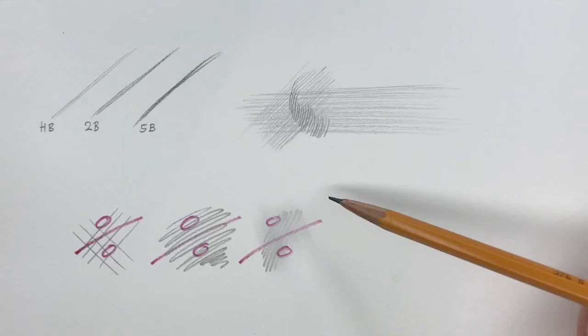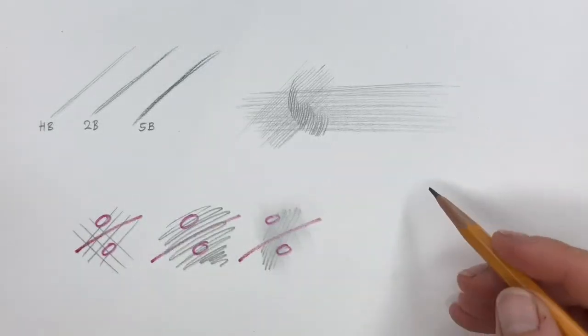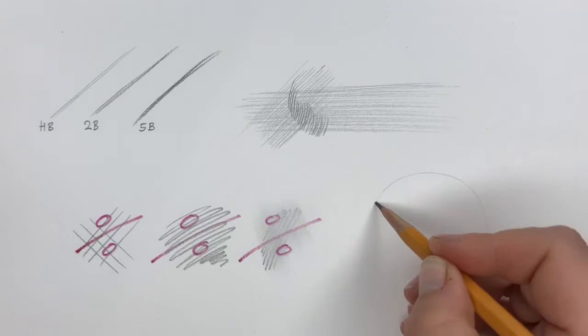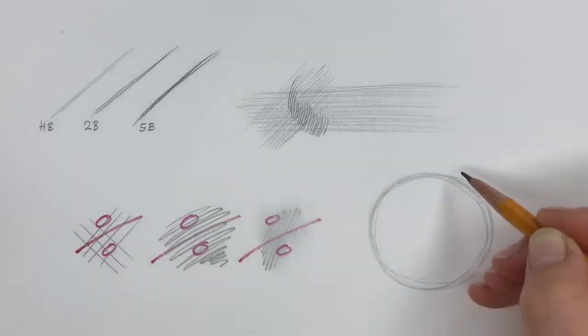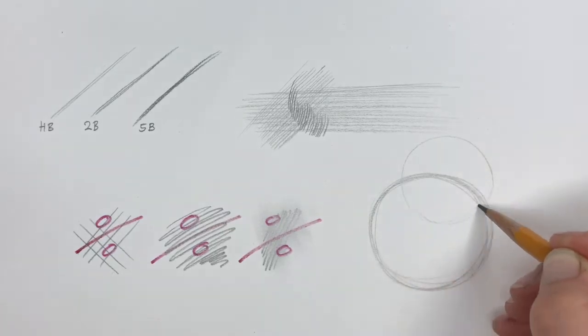Another practice would be to draw circles. So drawing circles on a piece of paper, you go round and round until they're round, and you draw many of them in many different sizes.